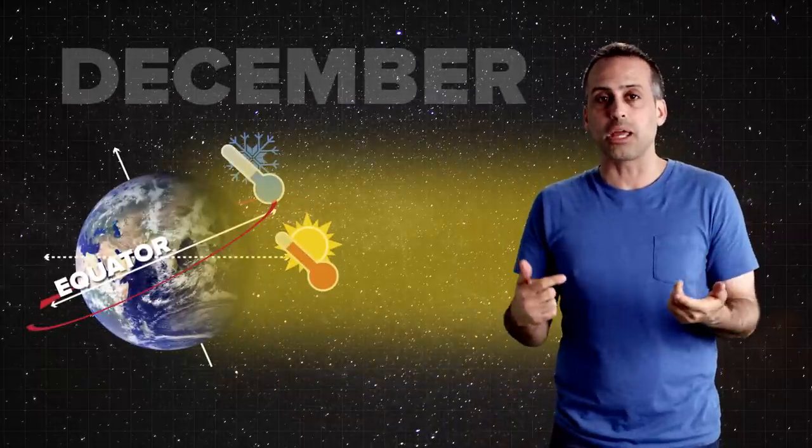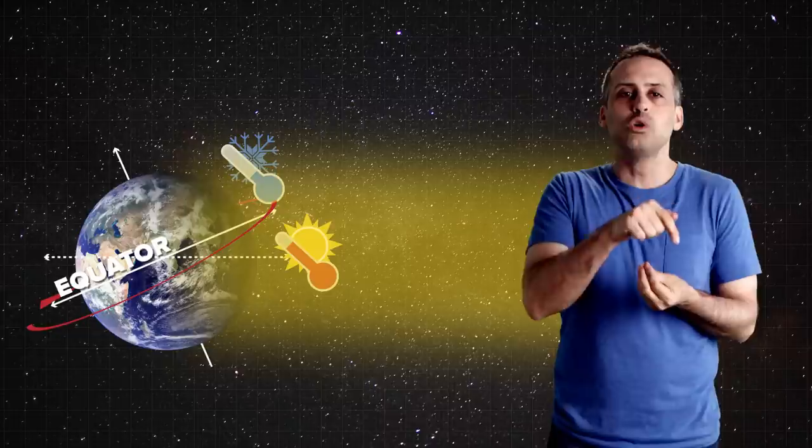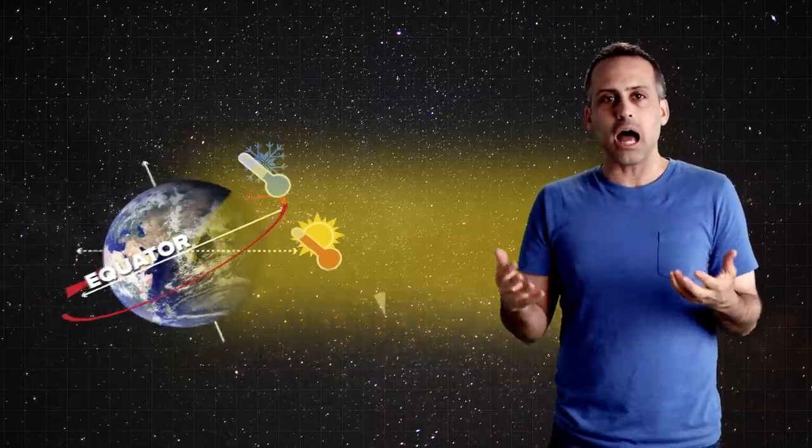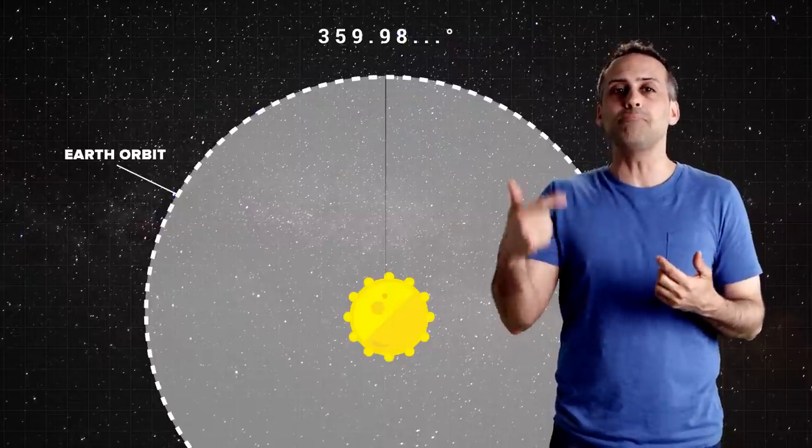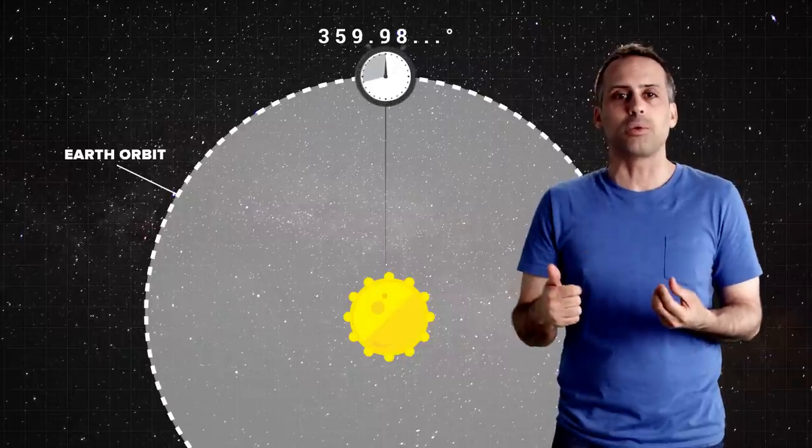Now from one spring equinox to the next spring equinox, Earth does not actually move a full 360 degrees around the sun. It only moves 359.98 something degrees. That means that one cycle of seasons is completed about 20 minutes earlier than a full 360 around the sun.